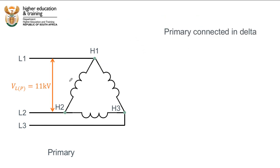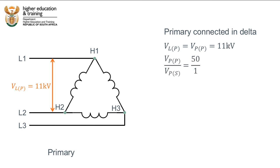We know the primary side is connected in delta, so the line voltage on the primary side equals the phase voltage on the primary side, which they've told us is 11 kilovolts. They've also given us the turns ratio: primary to secondary is 50 to 1, which we can write as secondary to primary 1 to 50.